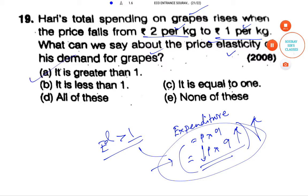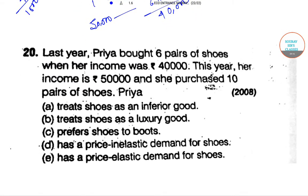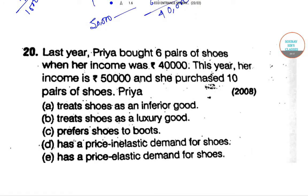The next question: Last year Priya bought 6 pairs of shoes when her income was 40,000. This year, when her income increased to 50,000, she purchased 10 pairs of shoes. The options are: she treats shoes as an inferior good, as a luxury good, she prefers shoes to boots, or she has price elastic demand for shoes.